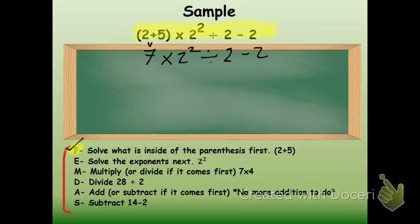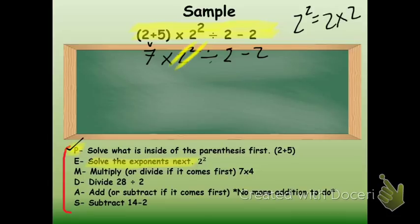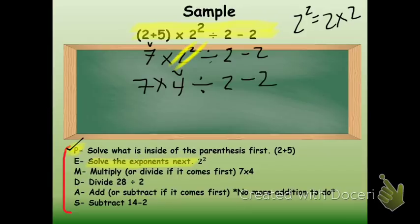Next thing, following the order of operations, is to solve the exponents. In this problem you have one exponent, which is 2 squared. If you don't recall, 2 squared is the same as saying 2 times 2, which gives us an answer of 4 when simplified. So I'll write that 4 down and bring everything else in that problem down with it. Now the next thing to do is either multiply or divide. We will end up multiplying first — 7 times 4 — because it comes first in our problem working left to right. And 7 times 4 gives me a product of 28.